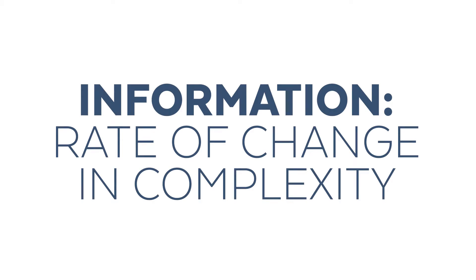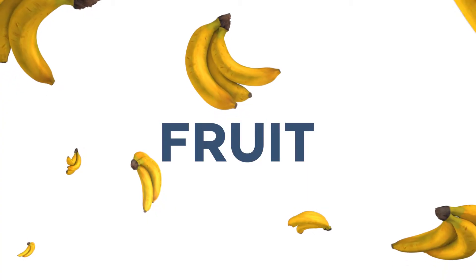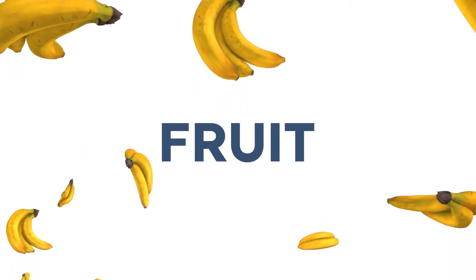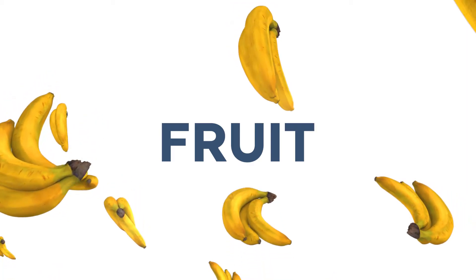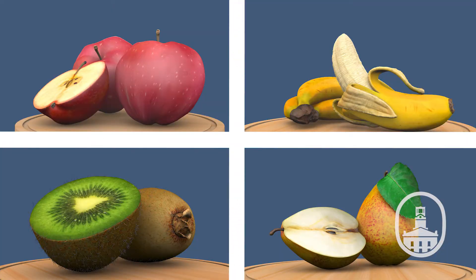Information is the rate of change in conceptual complexity. What this essentially means is that if you can form a concept — which is a mental representation of some category of objects — for instance, the category might be fruit, where the objects might consist of a banana, an apple, a pear, and a kiwi. That could be your concept of fruit consisting of those objects.